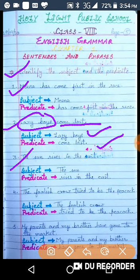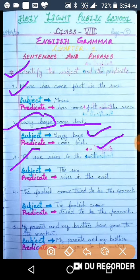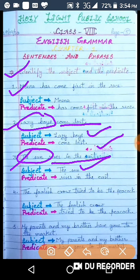Third is: The sun rises in the east. सूर्य पूरव से निकलता है. इस sentence में बात हो रही है किसके बारे में? इसमें बात हो रही है sun के बारे में. तो sun हमारा subject हो जाता है और rises in the east is predicate.